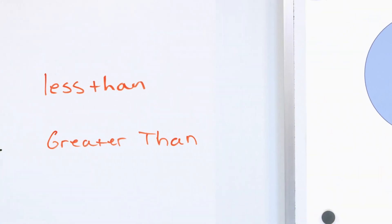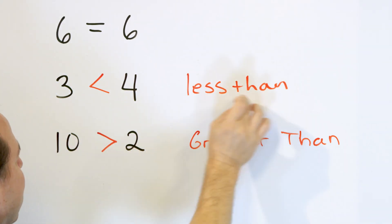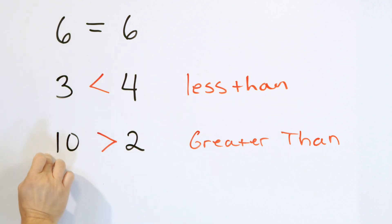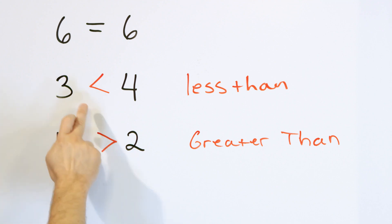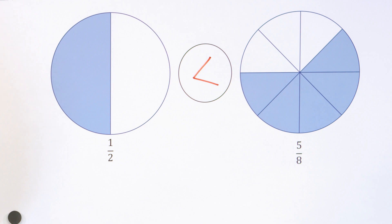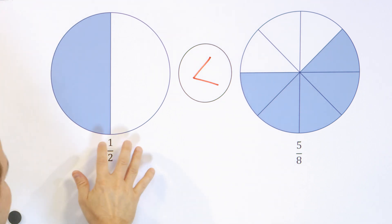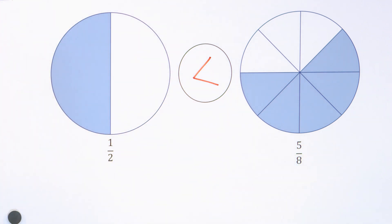Exactly the same way we said three was less than four. This arrow, when it points this way, means less than; when it points the other way, it means greater than — but it always points to the smaller number, no matter what. In this case, the smaller number happens to be the fraction one half and the bigger number happens to be five eighths.